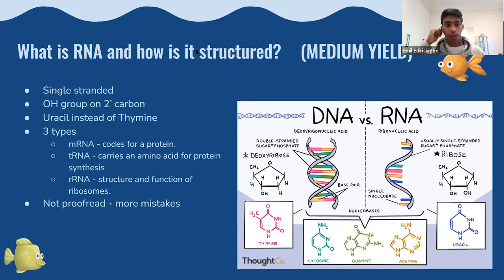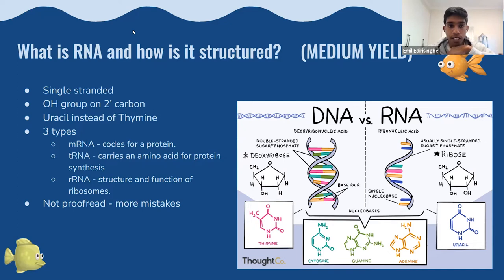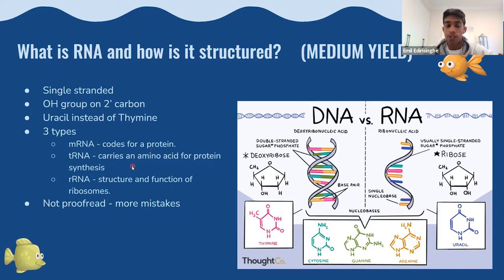Now moving on to central dogma two — how RNA is produced and how RNA goes to proteins. The structure of RNA: it's single stranded, has an OH group on the two prime carbon, uses uracil instead of thymine. There are three different types: mRNA codes for protein, tRNA carries amino acids for protein synthesis, and rRNA provides structure and function for ribosomes. Importantly, RNA is not proofread, which means there can be a lot more mistakes when it is made.